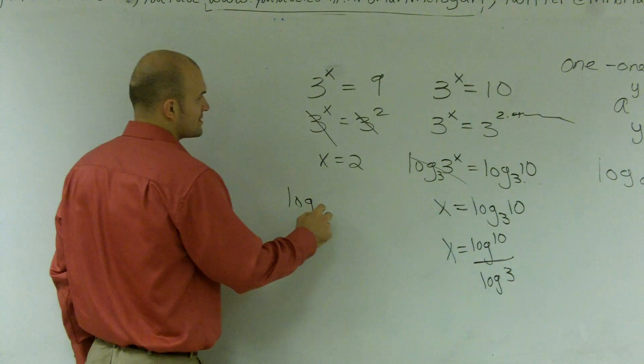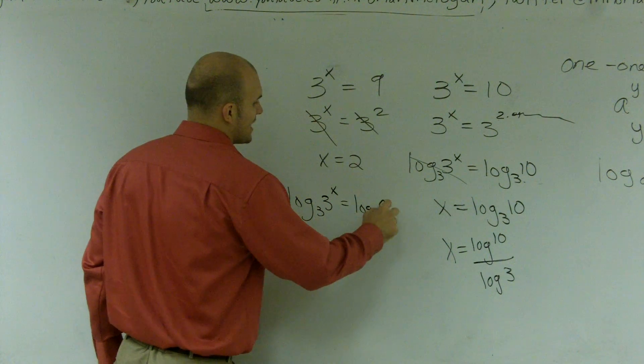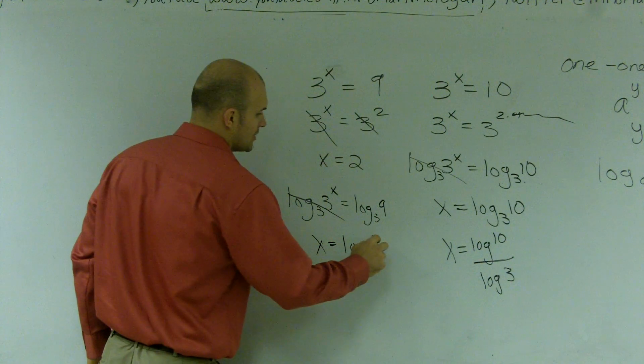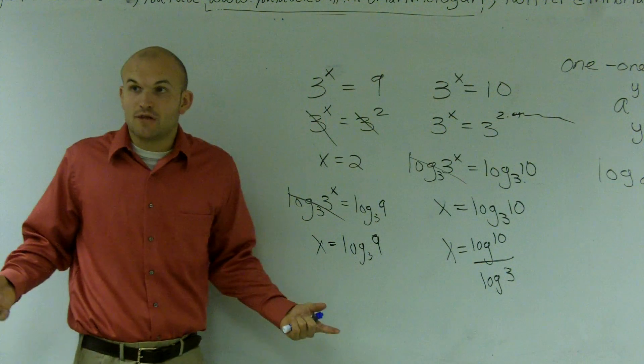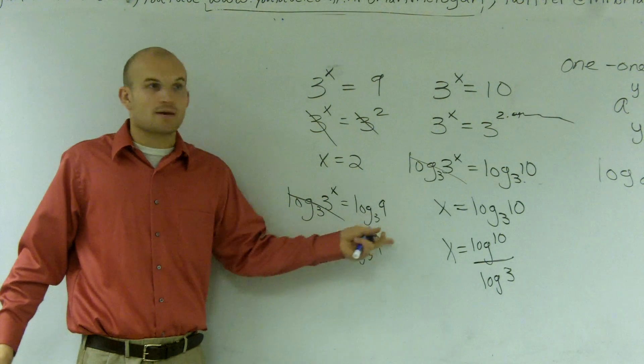Come on, ladies and gentlemen. You're giving me like scary eyes. Log base 3 of x equals log base 3 of 9. That cancels out. x equals log base 3 of 9. Definition of logarithm. Your base raised to what you're evaluating is what? 3 raised to what number gives you 9?